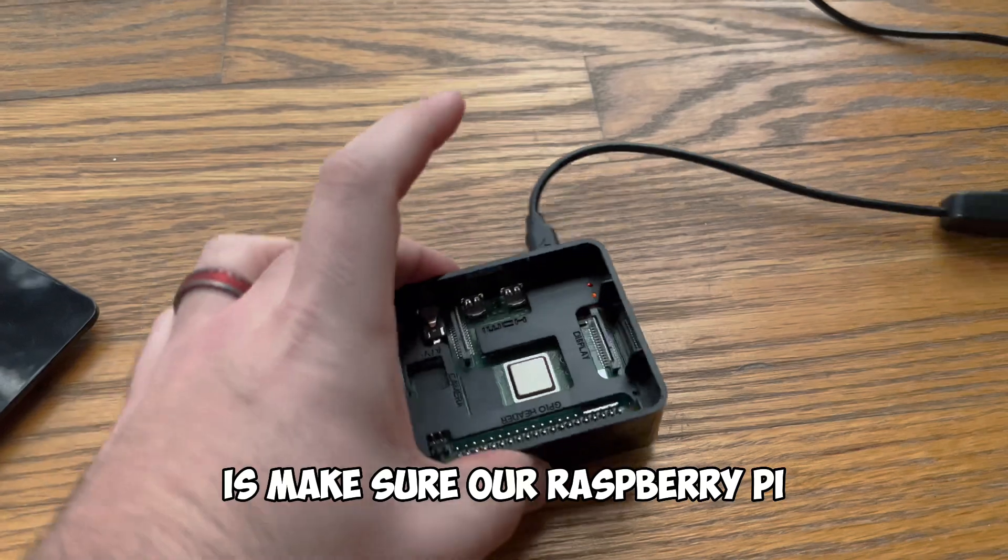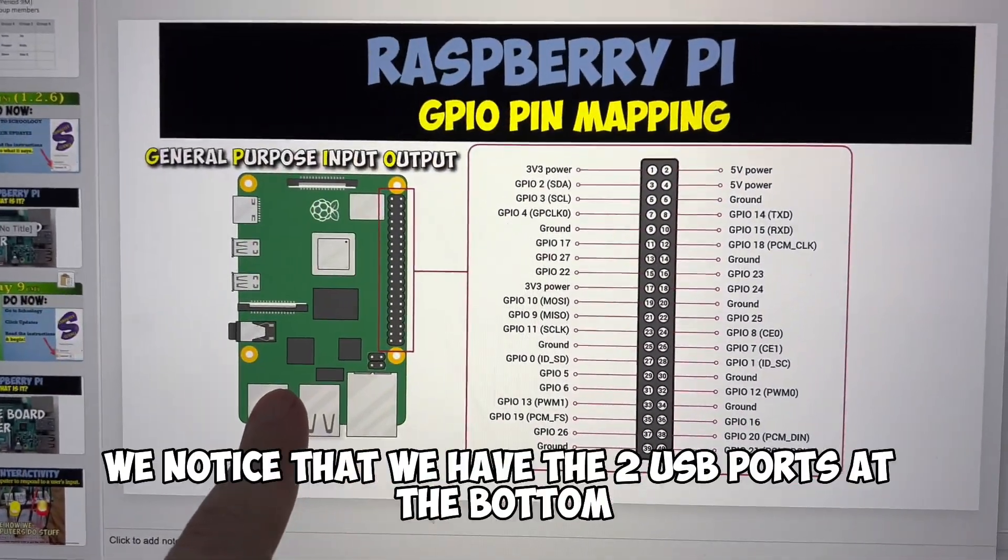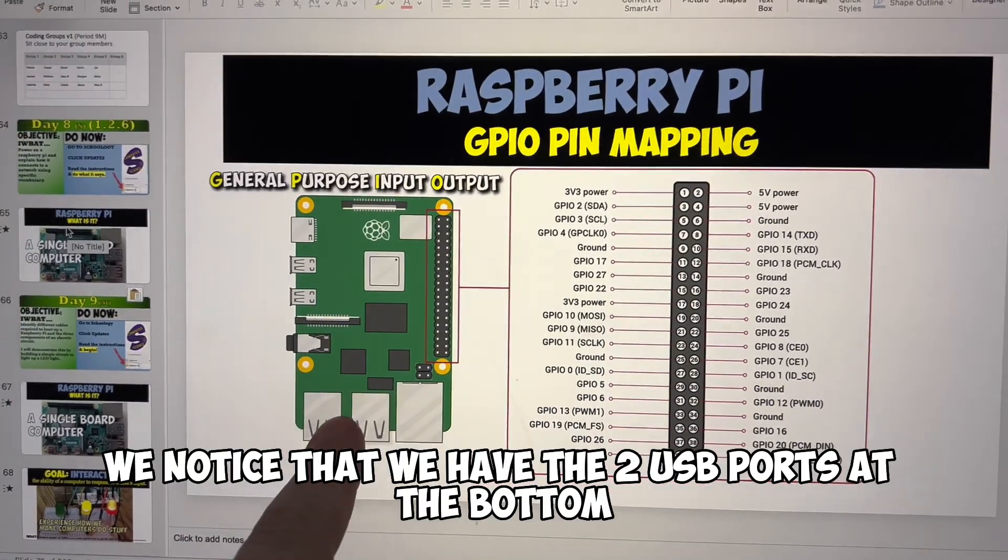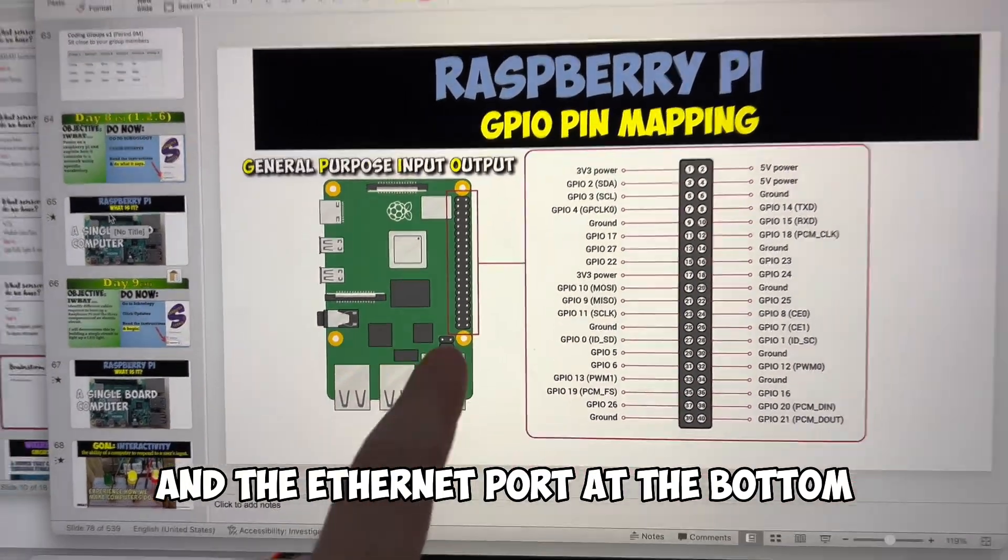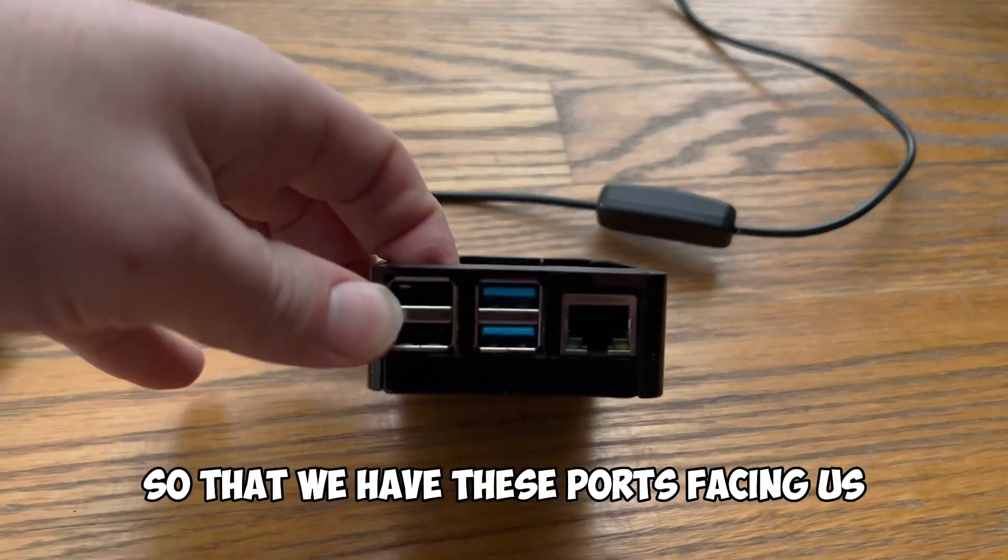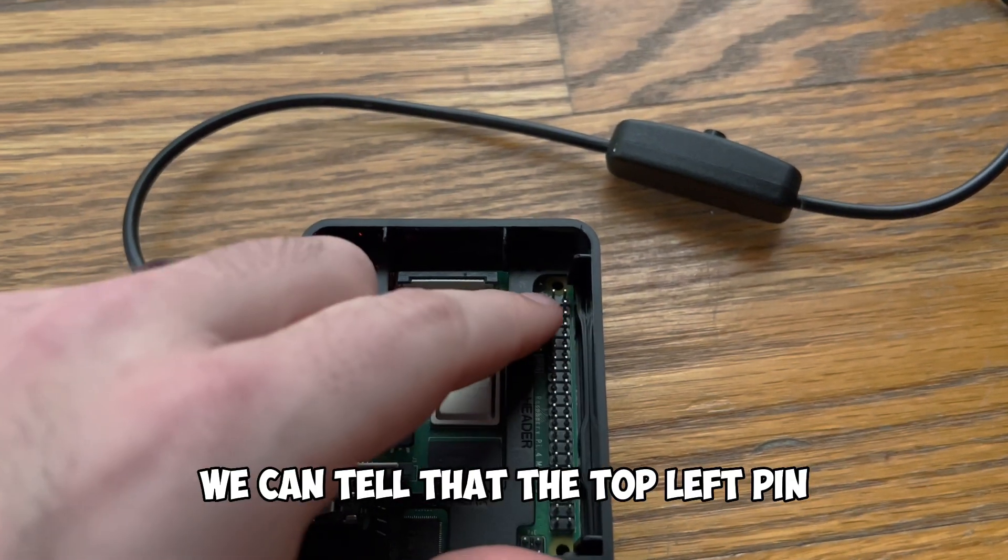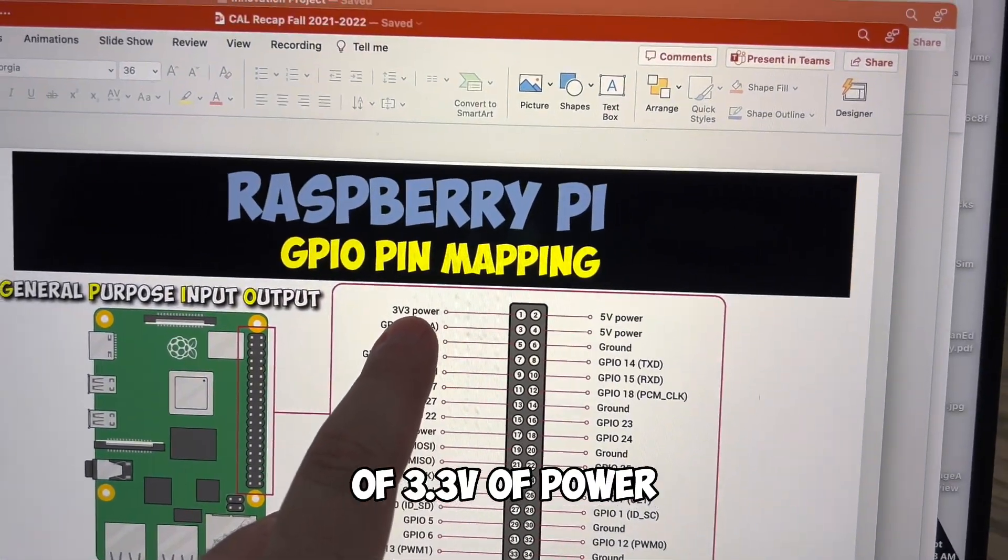The first thing we want to do is make sure our Raspberry Pi is facing the right direction. When we take a look at our map we notice that we have the two USB ports at the bottom and the Ethernet port at the bottom. So we want to make sure we align this so that we have these ports facing us